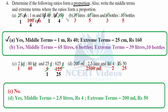Part b: Units cancel. 3 thirteens are 39 and 5 thirteens are 65. Bottles cancel: 3 to 6 and 5 to 10. The ratios are the same — therefore in proportion. Middle terms are 65 liters and 6 bottles; extreme terms are 39 liters and 10 bottles. Remember to write the initial values, not the converted ones.